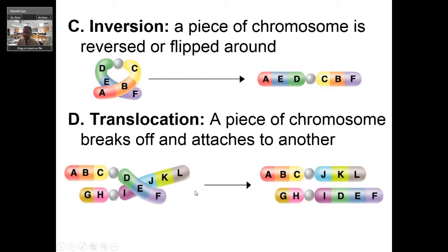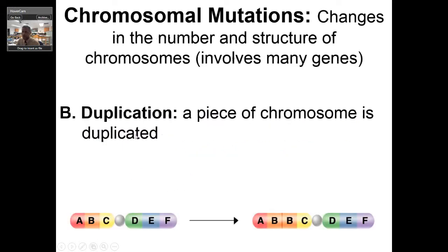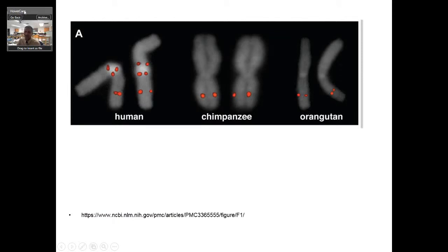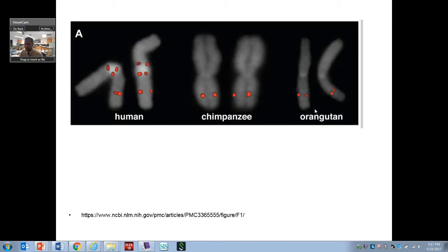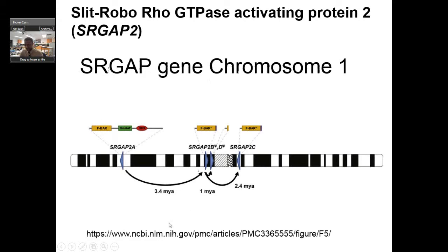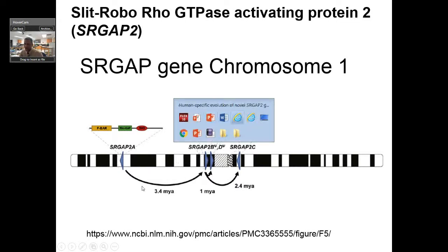Now let's talk about translocation. There are really two parts to this evolutionary legacy: duplication caused the increase in coding information, and translocation led to chromosome fusion. Looking at duplication — if you look at these red dots on the diagram, there's a segment of a gene. In humans, we have three copies of this gene, meaning two extra copies, while it doesn't appear in chimpanzees or orangutans. The gene is called SLIT-ROBO Rho GTPase-activating protein. According to a peer-reviewed paper, it duplicated about 3.4 million years ago, and then there was another duplication.